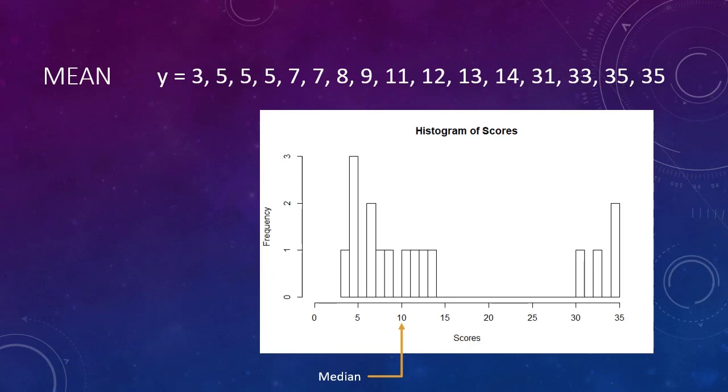Now, if I were to try to balance this distribution on my finger with my finger at the median of 10, the distribution would topple over to the right. Why? Because 10 is not the center of gravity. There are some extreme scores out on the right end of the distribution. I would need to move my finger toward those scores. Here's where I would need to put my finger to balance the histogram.